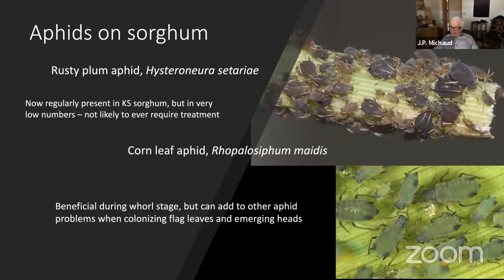Another one is the rusty plum aphid — another one I regularly find in very small colonies, so I doubt it will ever cause economic problems. However, if we get an outbreak of any one aphid species — whether region-wide or just in a particular field — all the aphid species present can participate, because they all share the same natural enemies. When the natural enemies are overwhelmed, they all escape control together, as we saw when the sugarcane aphid was in its heyday.